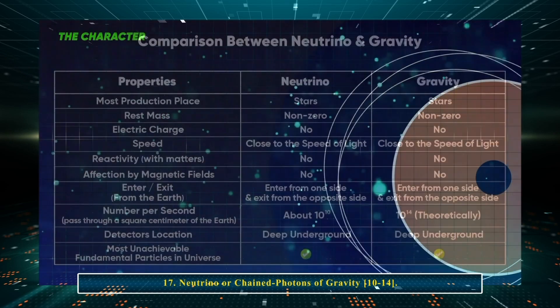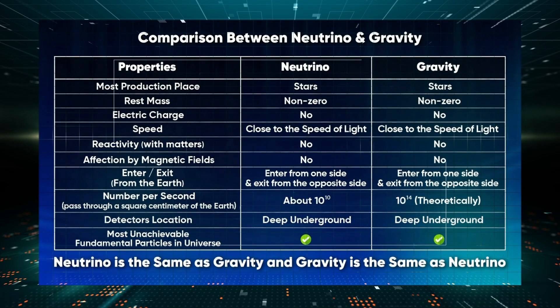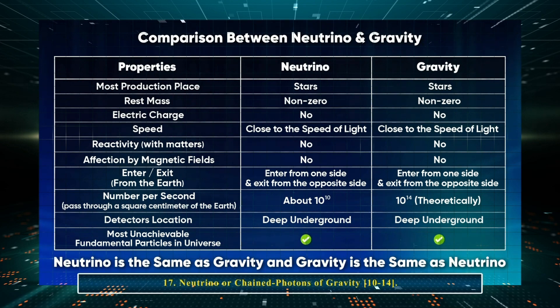Considering the above characteristics and comparing neutrino features with the features of gravitational waves, we can say: neutrino is the same as gravity, and gravity is the same as neutrino.